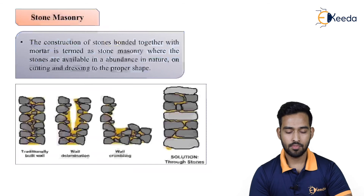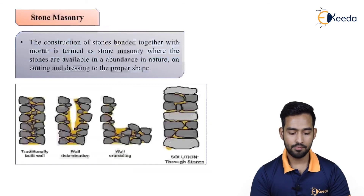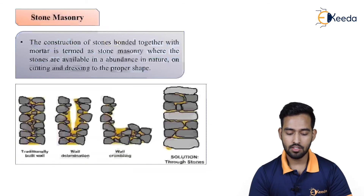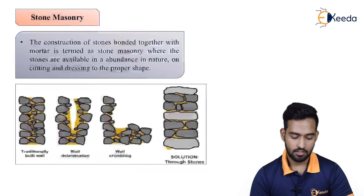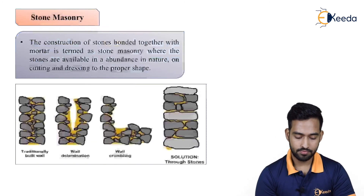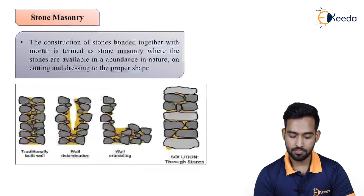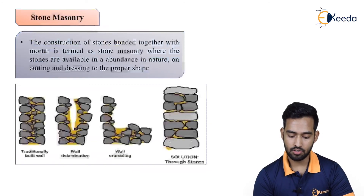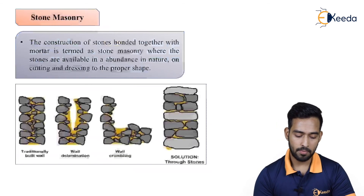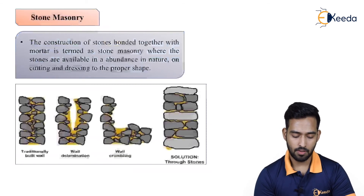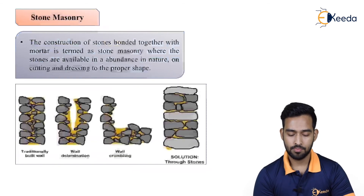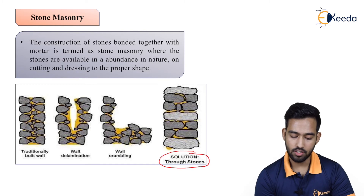The construction of stones bonded together with mortar is termed as stone machinery, where the stones are available in abundance in nature on cutting and dressing to the proper shape. In the traditional wall, problems like wall delamination and wall crumbling occur. The solution is through stones — generally in the traditional way this type of machinery deteriorates over time because of crumbling or delamination, and this can be solved by using through stones at regular intervals, which gives stability to the structure.